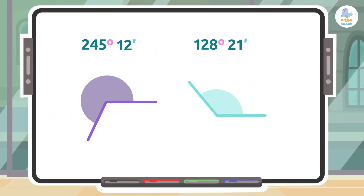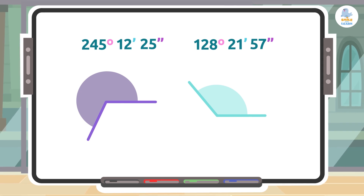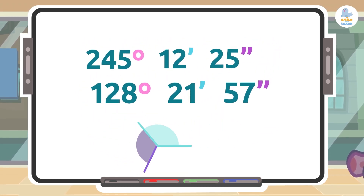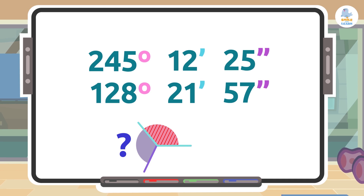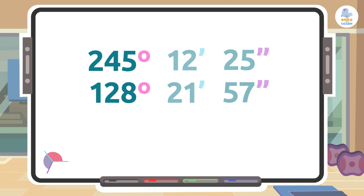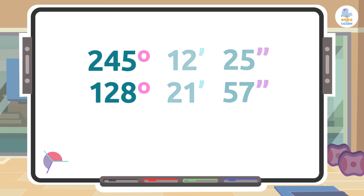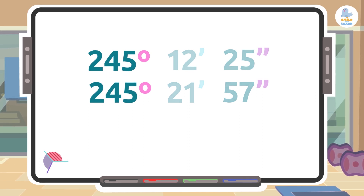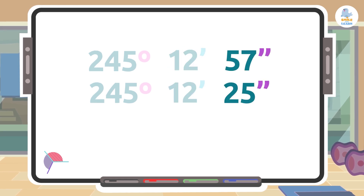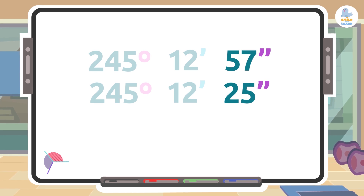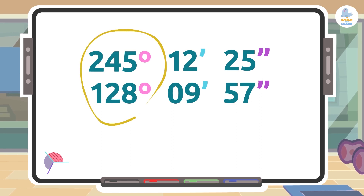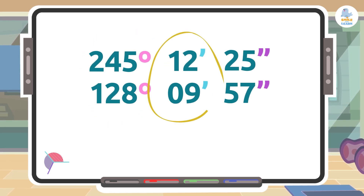The first step is to place the angle measures in the same format as a normal subtraction — the smaller angle under the bigger angle. How do we know which one is bigger? We look at the degrees. The number with the largest degree is the largest angle. If the degrees are the same, we look at the minutes, and the largest goes on top. If those are equal too, we look at the seconds. Once we know which angle is larger, we place degrees under degrees, minutes under minutes, and seconds under seconds.